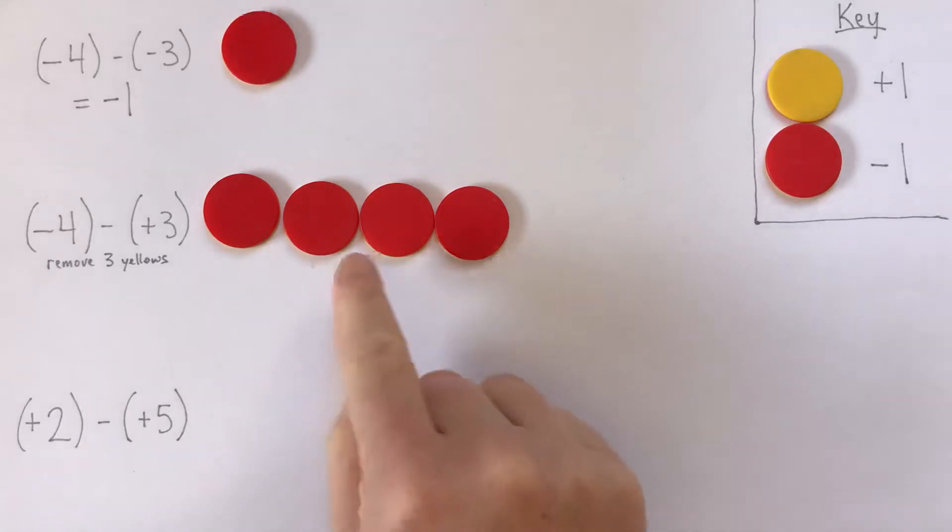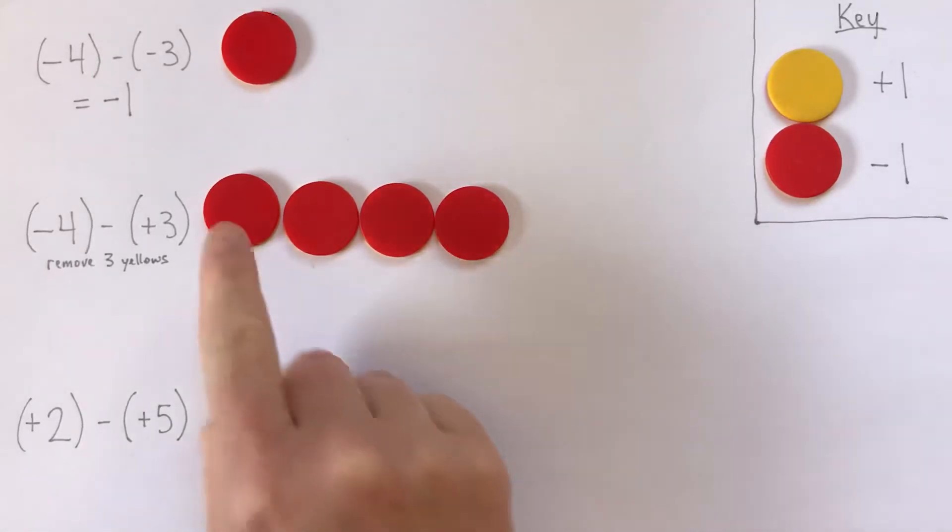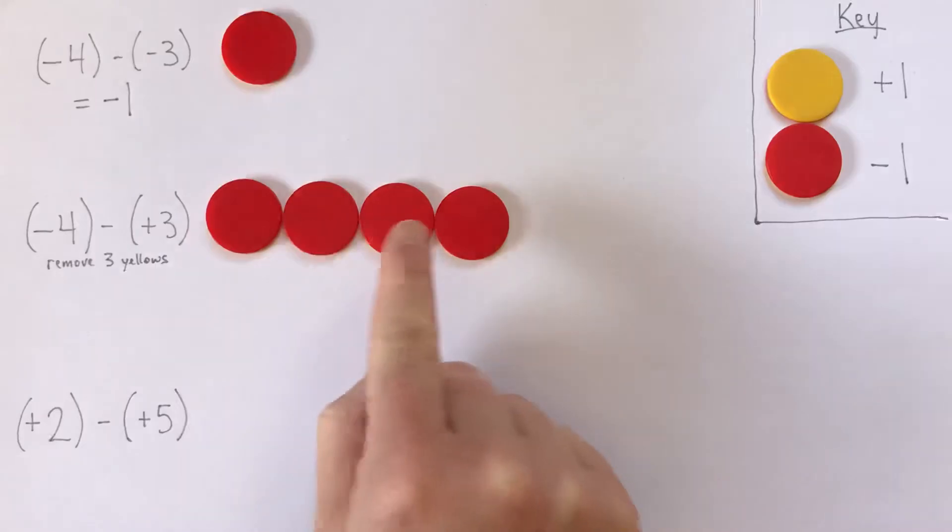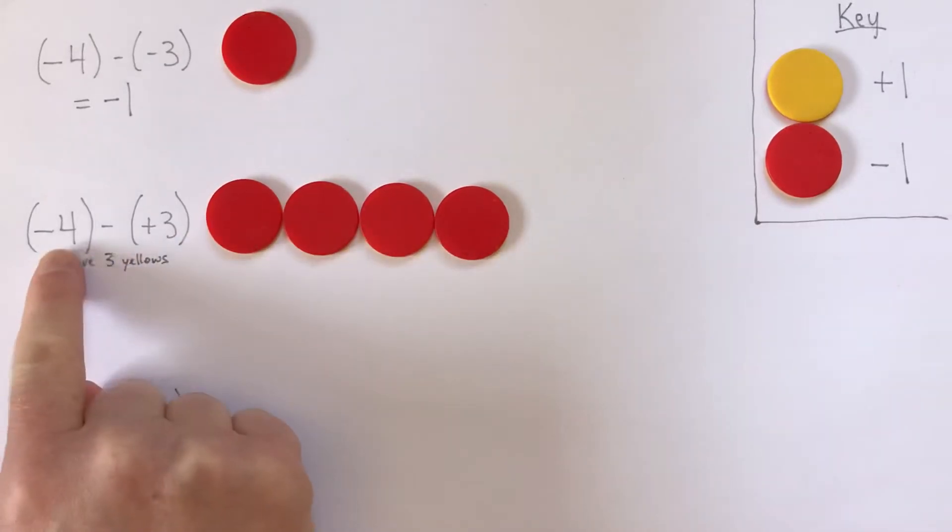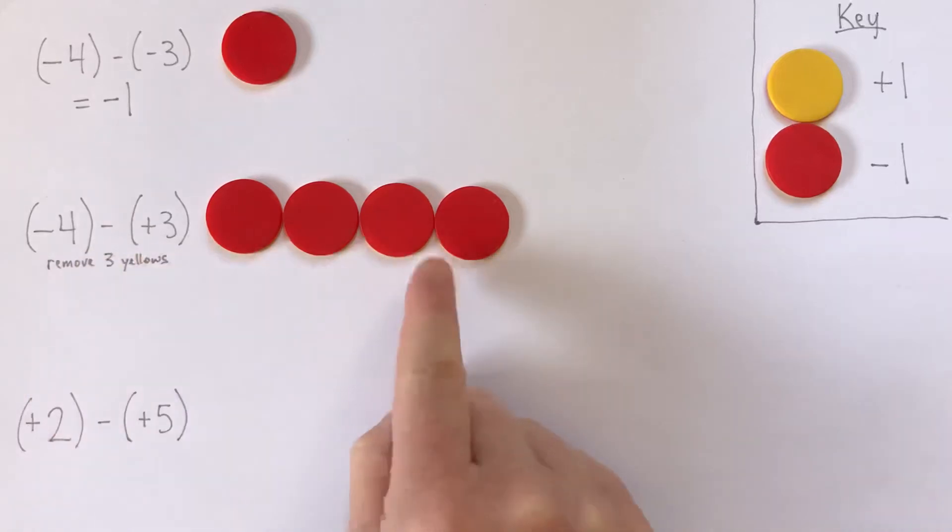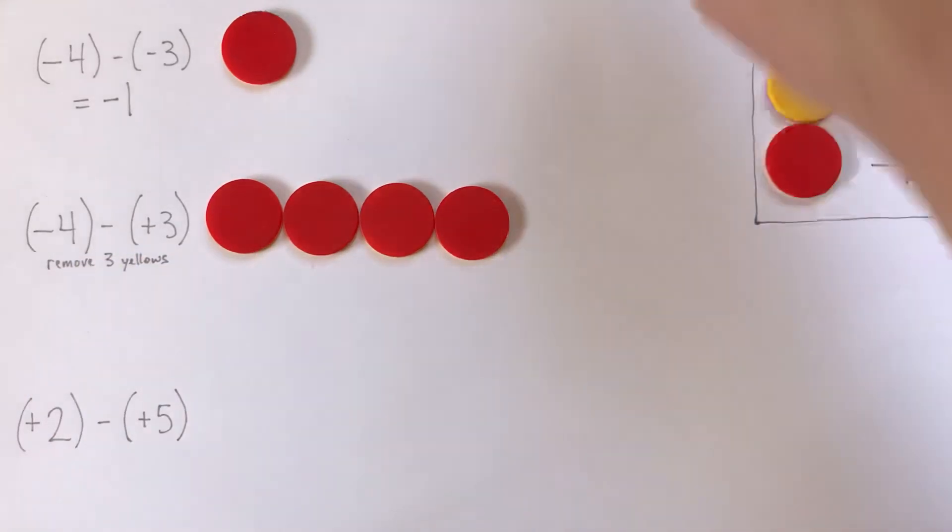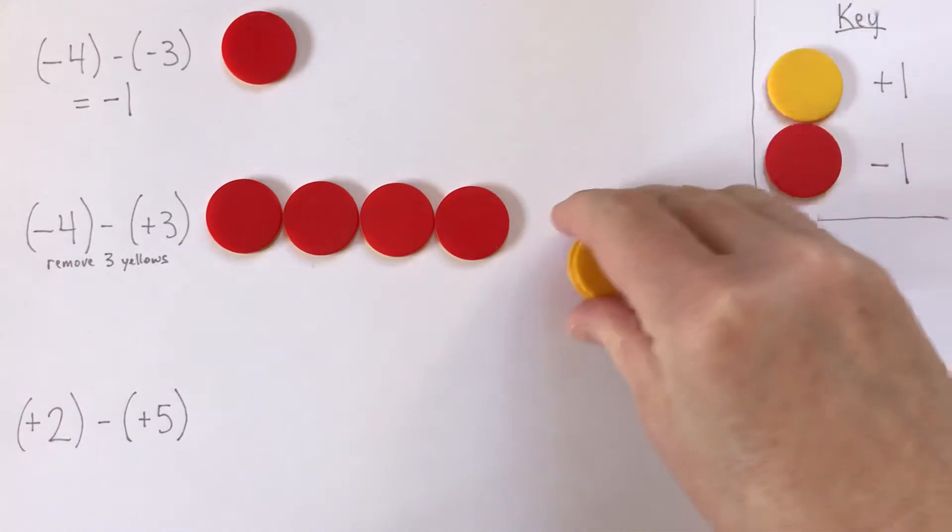Now, if you look at this, you might think, well, there are no yellows. How are we going to do that? And that's very reasonable. So what that means is we can't remove 3 yellows from this particular representation of negative 4. We're going to have to represent negative 4 a different way. And the way we do that is by using zero pairs.